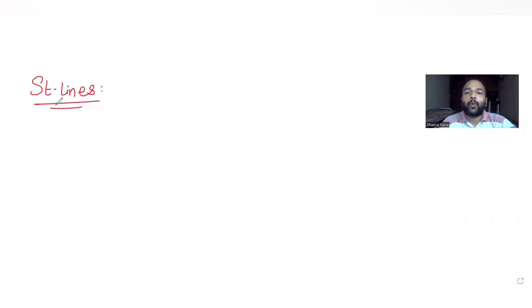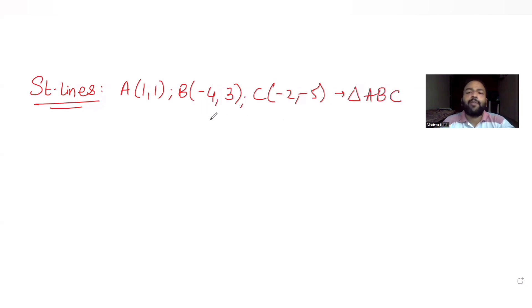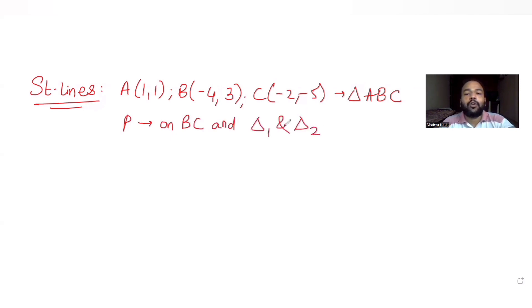The question tells us that let A(1,1), B(-4,3), and C(-2,-5) be the vertices of a triangle ABC. Further, we have been told P is a point on BC.